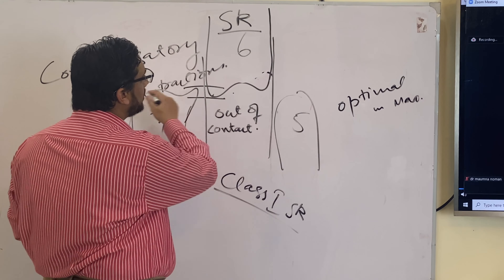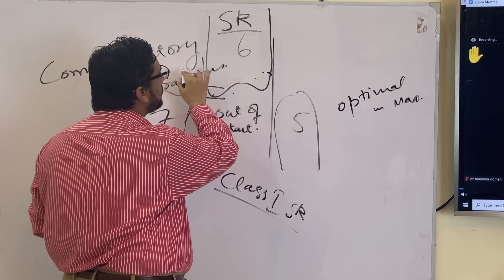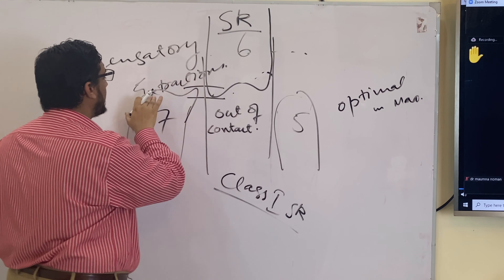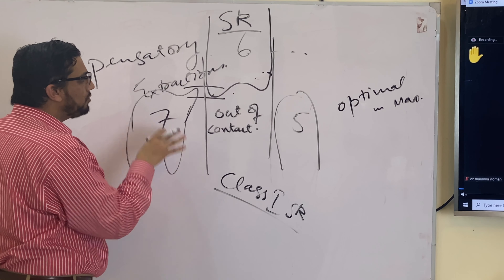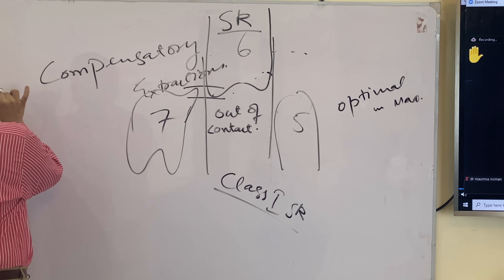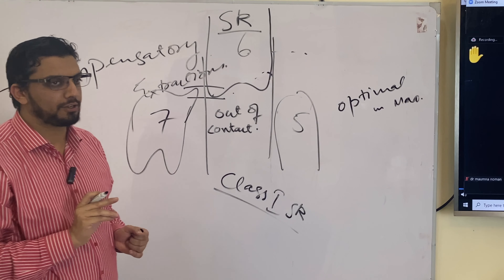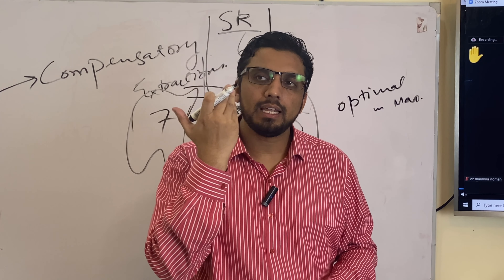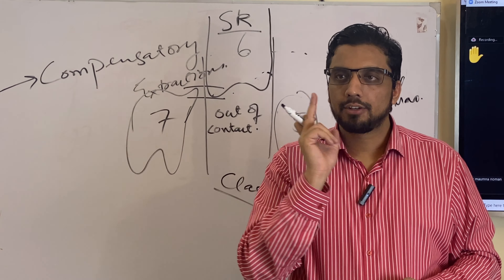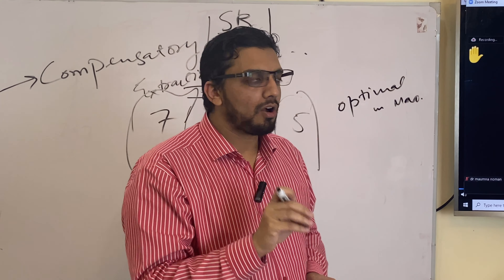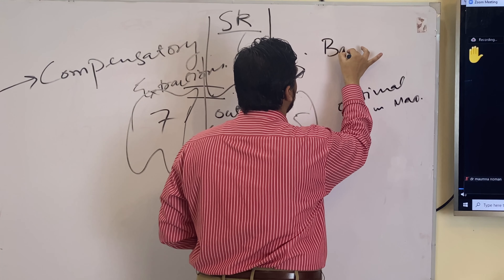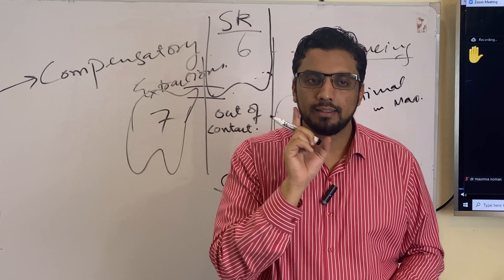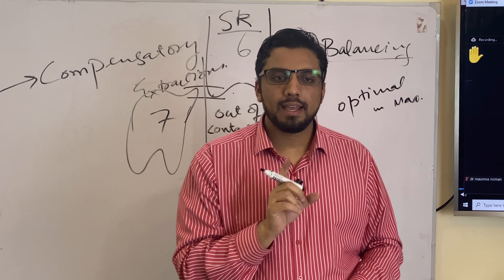You can give a bite plane, a removable appliance, a functional appliance, or bond with a fixed retainer to prevent supra-eruption. If the opposing tooth is in contact with the fifth or seventh, you do not need compensatory extraction. The compensatory extraction is the extraction of the opposing tooth in the opposing arch. The balancing extraction is the extraction in the same arch to preserve the midline.